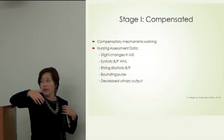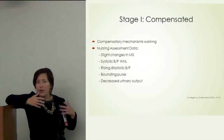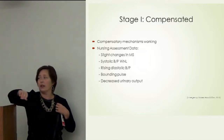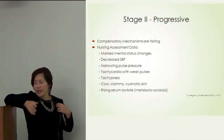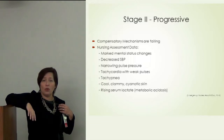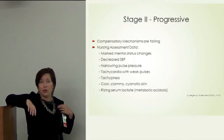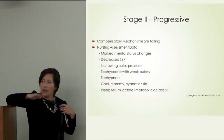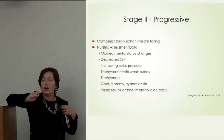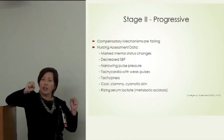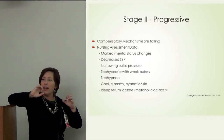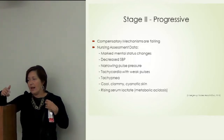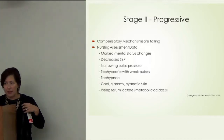In compensated shock you also see decreased urine output — that fight-or-flight response of holding onto fluid. As compensatory mechanisms start to fail in progressive shock, you'll see marked mental status changes, decreasing systolic blood pressure, narrowing pulse pressure, tachycardia with weak pulses, cool and clammy extremities, and on serial labs a rising serum lactate indicating metabolic acidosis.